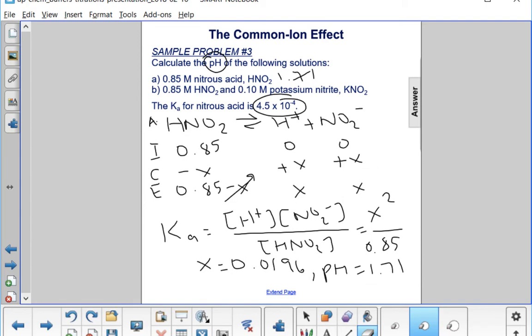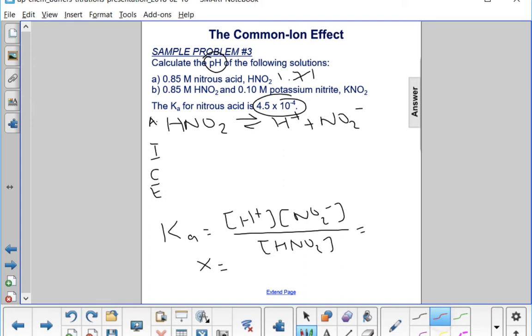In part B now, we have the same initial concentration of HNO2, 0.85 molar, but we also now have some potassium nitrate that when it dissociates will result in a nitrite concentration of 0.10 molar.